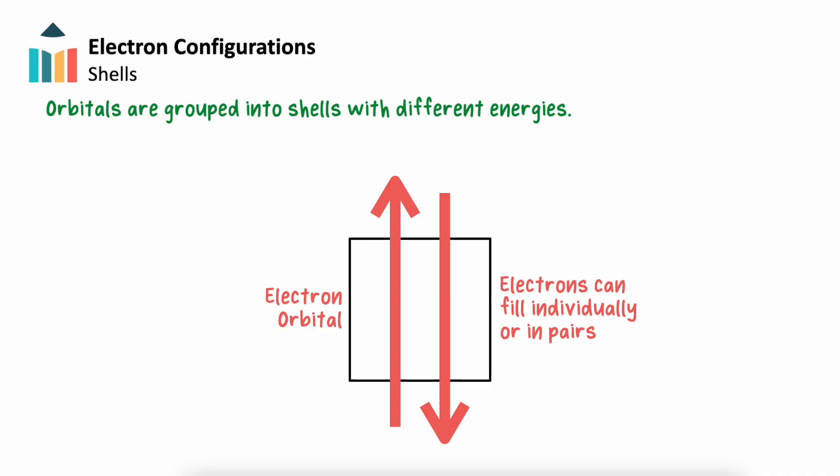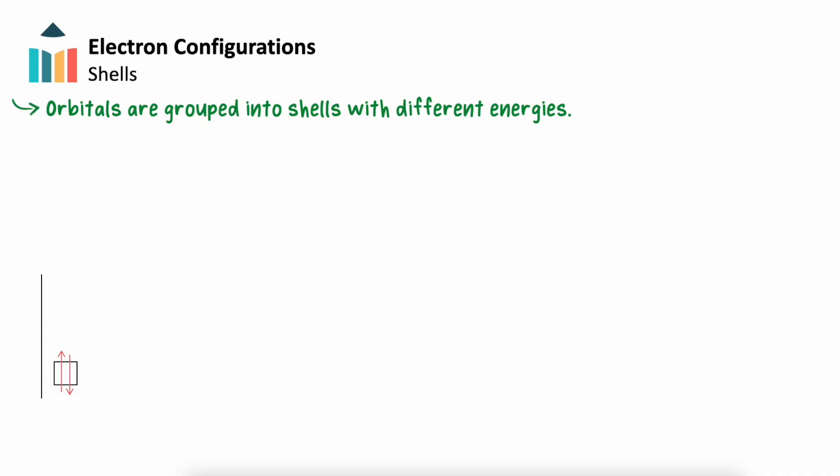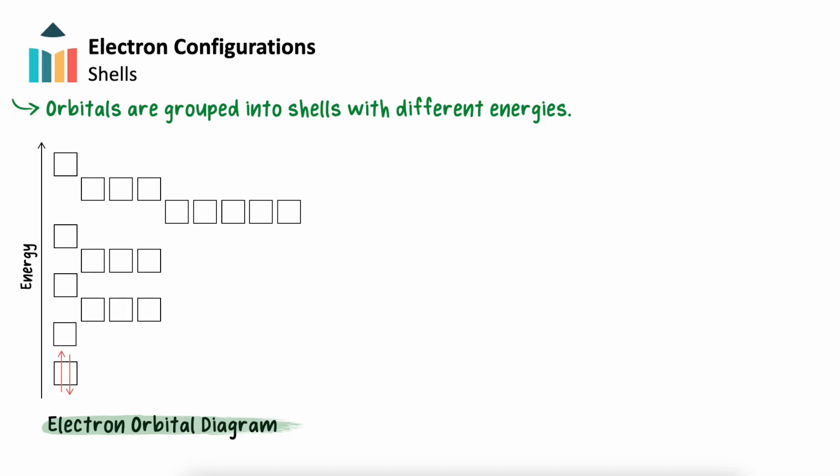These orbitals are grouped into shells based on their energies, which we can see using an electron orbital diagram. In this diagram, electron shells are labeled in order of increasing energy, using a number we call the principal quantum number N.